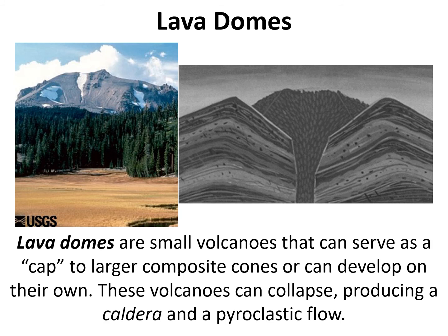Lava dome volcanoes are deceptive in that they're small but incredibly deadly. When they erupt, they actually collapse, and this collapse generates a feature called a caldera — sections of rock that have collapsed inward — which can cause an immense pyroclastic flow. These volcanoes are sometimes referred to as parasitic cones because they're often found inside the craters of composite cones. Think of it like a pressurized two-liter bottle of soda that you shake really hard and leave the cap on — when that happens, of course it's going to explode, and that's essentially what happens with these volcanoes acting almost like a cap.